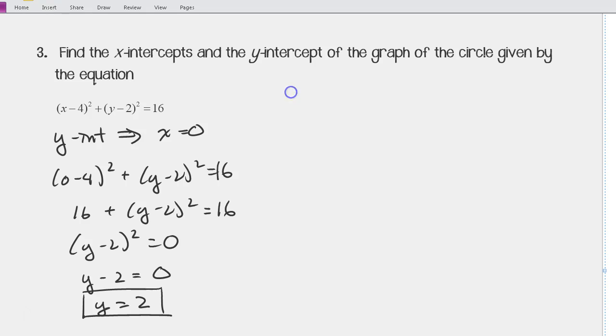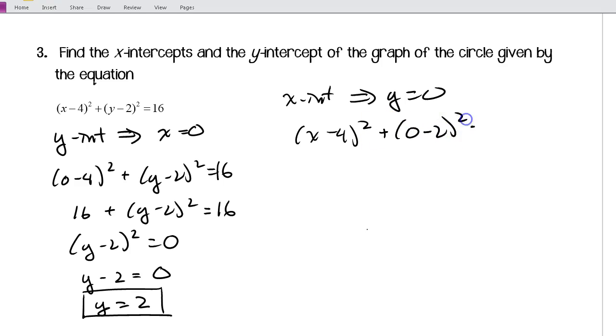Now, for our x-intercepts, intercept or intercepts, we know that y is going to be 0. So, we'll substitute in 0 for y. So, I've got (x - 4)² + (0 - 2)² = 16. So, I've got (x - 4)² + 4 = 16. (x - 4)² = 12. I'll take the square root of both sides. x - 4 is equal to positive or negative square root of 12.